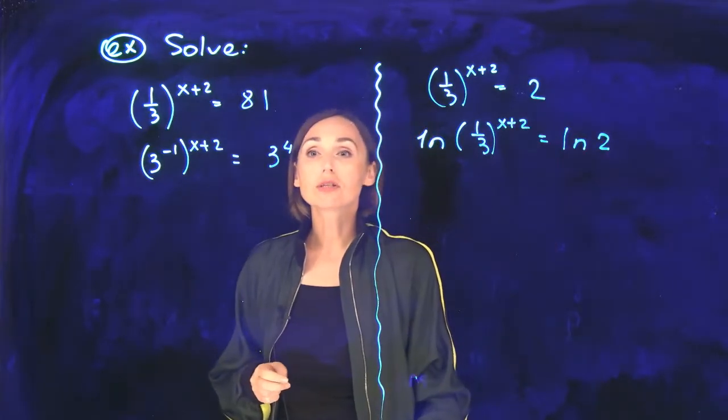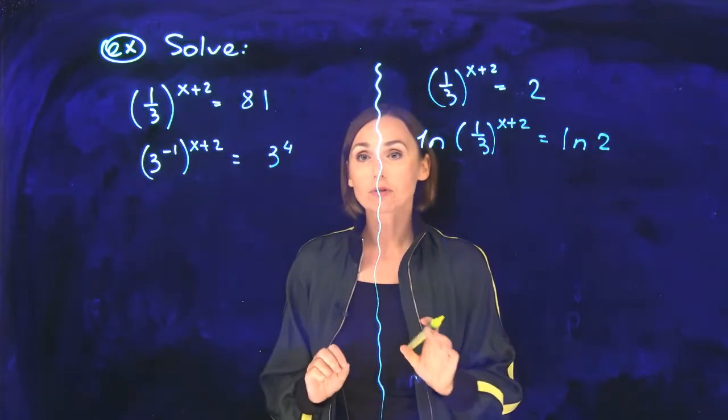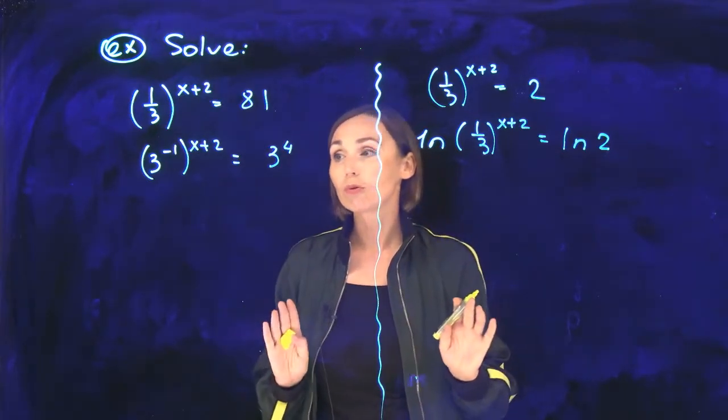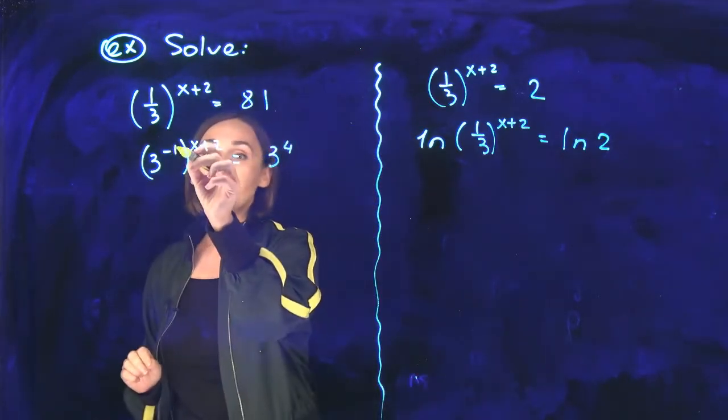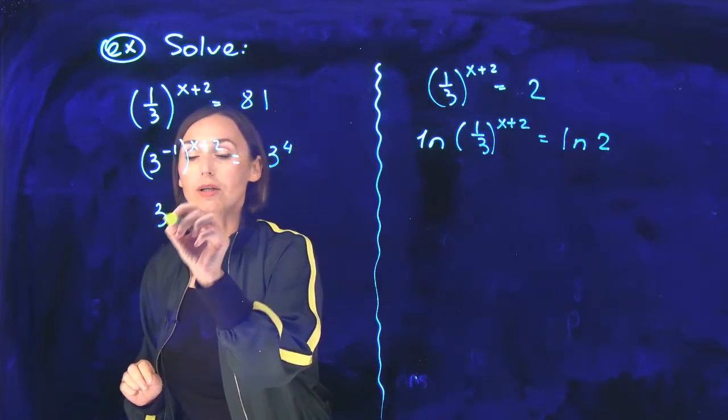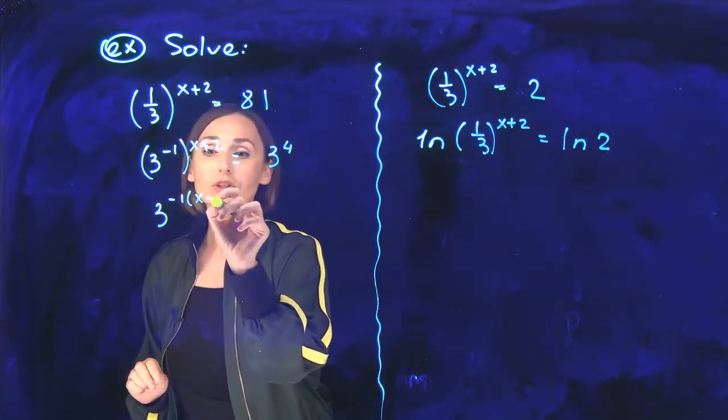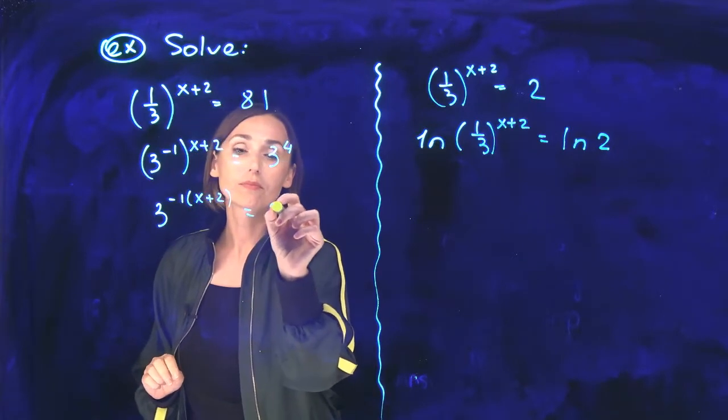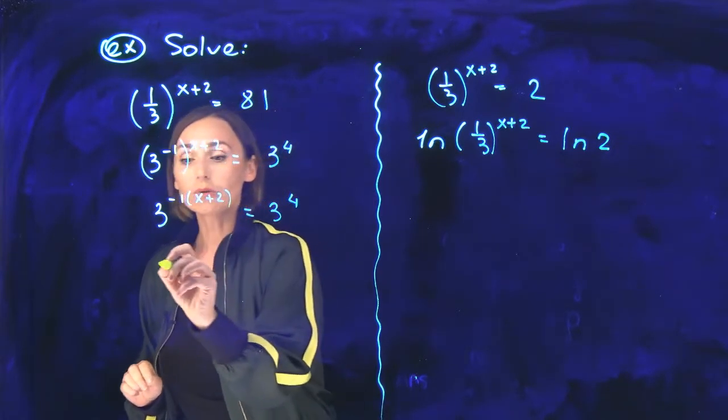That is the difference: how to solve these two types of equations. Let me finish both of them. Write to the power, so you need to multiply exponents here: negative 1 times x plus 2. Now you make exponents equal.